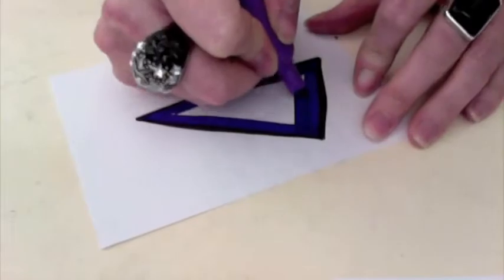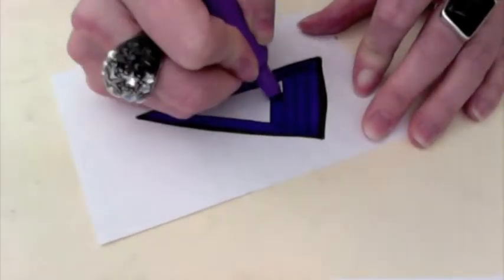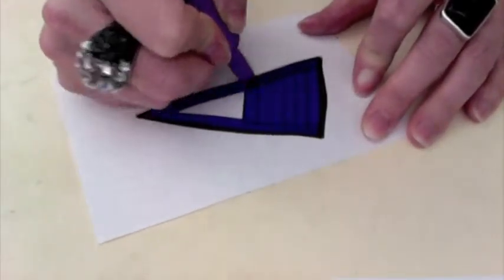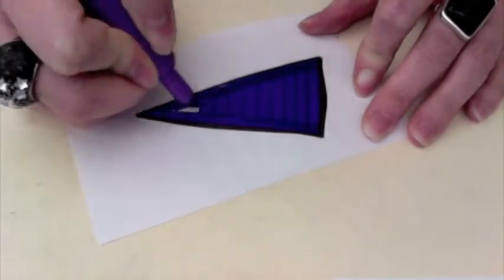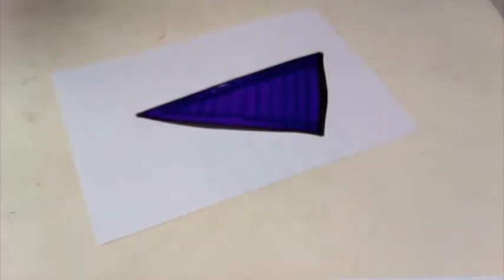When you're doing this, you want to color in a series of stripes, slightly overlapping each stripe as you're coloring and being sure to cover all the white.